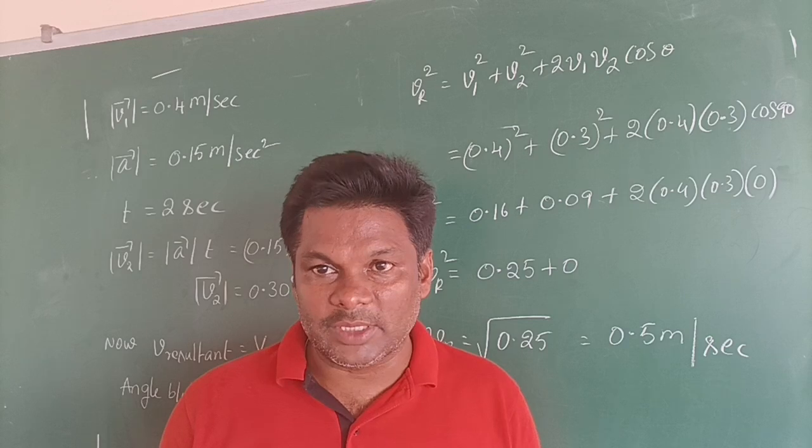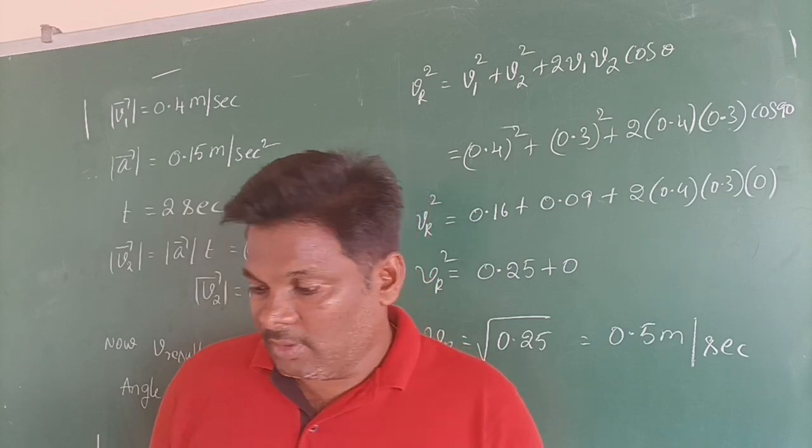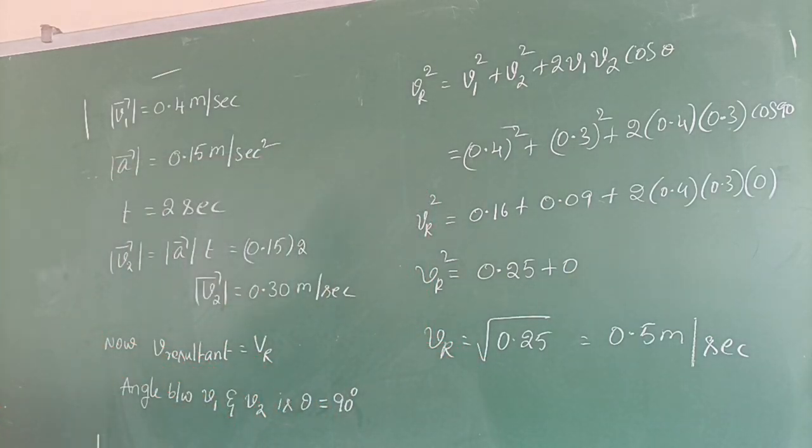So this is our seventh problem. From the concept of Parallelogram law of vector, we calculate our resultant VR by taking V1 as P, V2 as Q, and theta is the angle between V1 and V2. Please note it down. We will go for next sum. Pause this video and note it down.